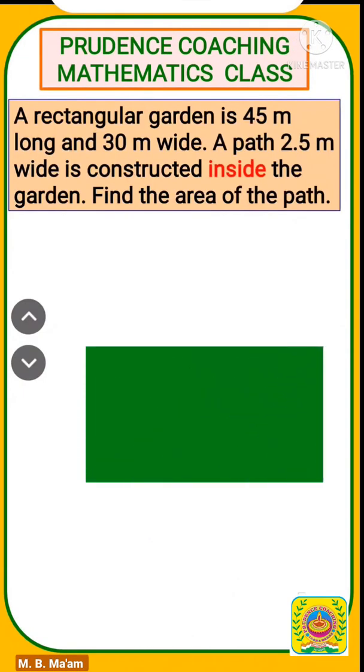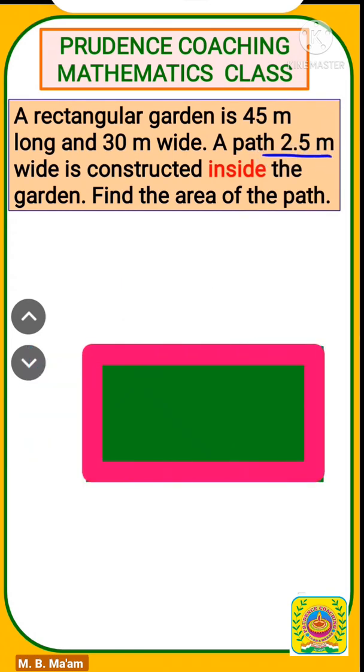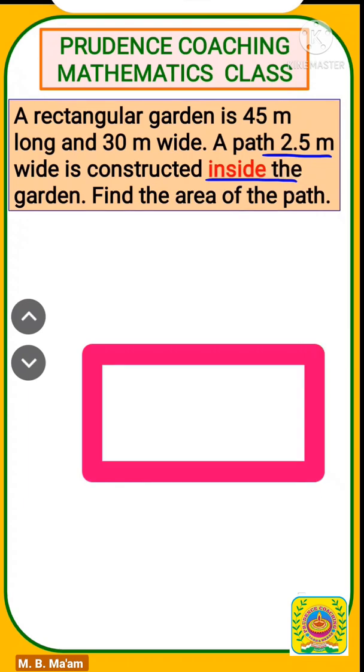So here it is given: a rectangular garden is 45 meters long and 30 meters wide. A path 2.5 meters wide is constructed inside the garden, and you are asked to find out the area of the path. So let's find...